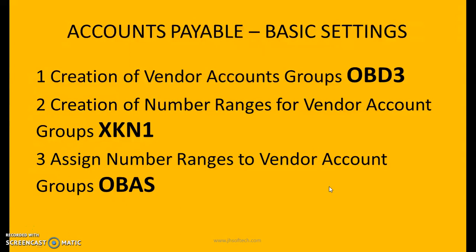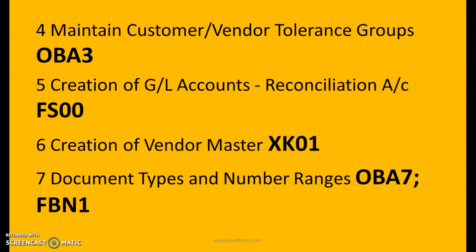Accounts payable basic settings: creation of vendor account groups — transaction code OBT3; creation of number ranges for vendor account groups — XKN1; assign number ranges to vendor account groups — OBAS; maintain customer or vendor tolerance groups — OBA3; creation of GL accounts reconciliation account — FS00; creation of vendor master — XK01.